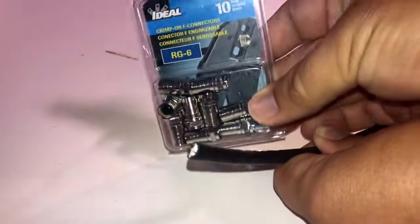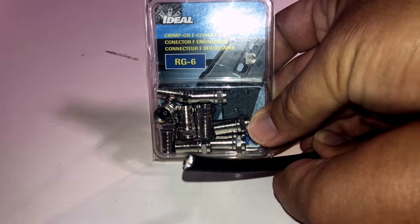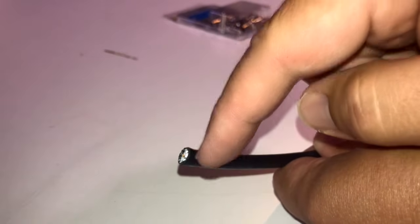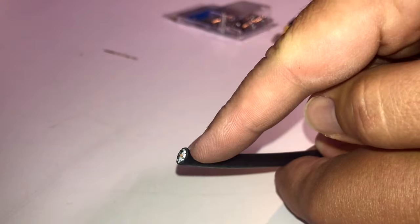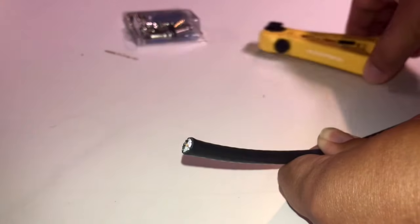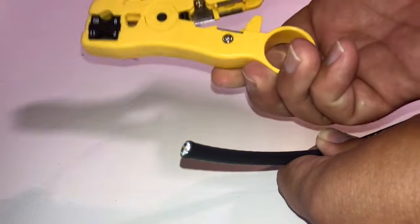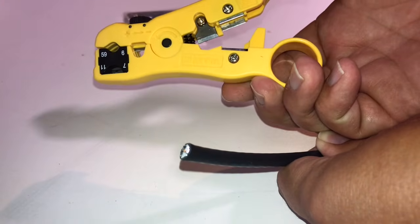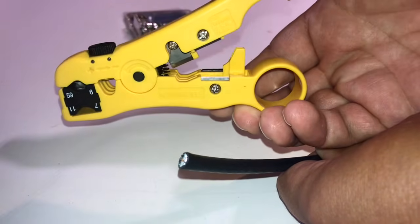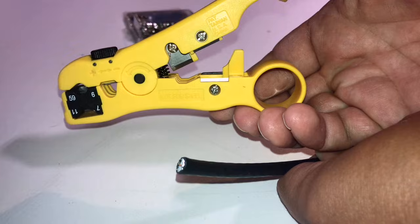You're going to need some RG6 compression fittings. By the way, this is RG6 cable right here. So you're going to need some RG6 compression fittings. You're also going to need a coax cutting tool. So this tool is definitely going to make your life a lot easier. It's pretty cheap, not very expensive at all.